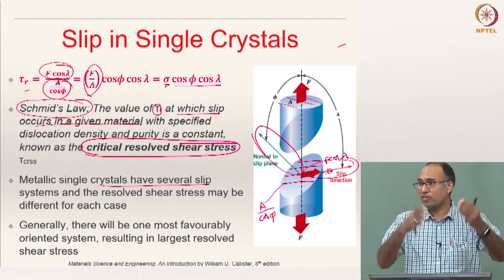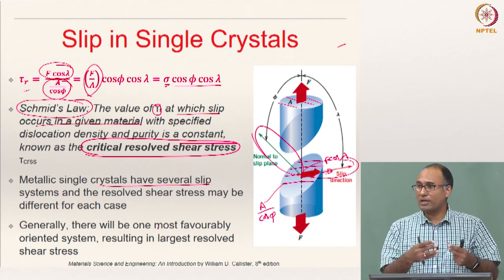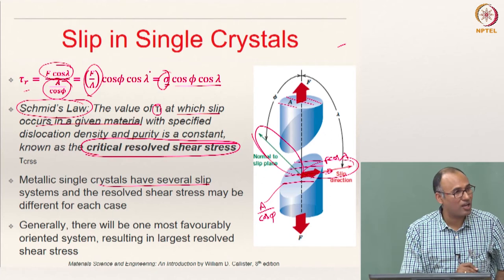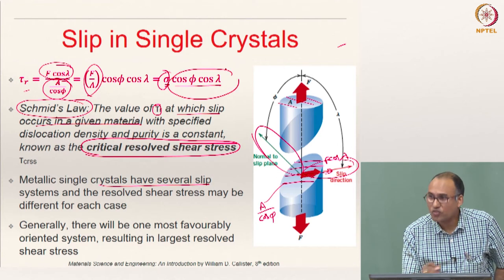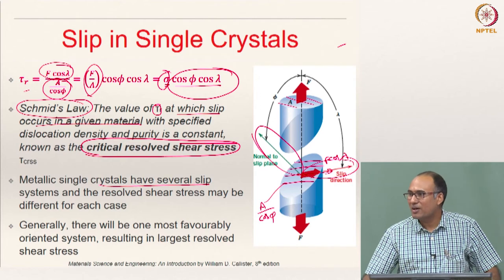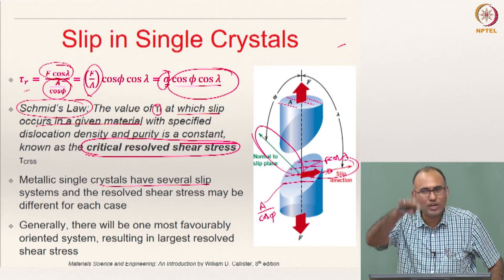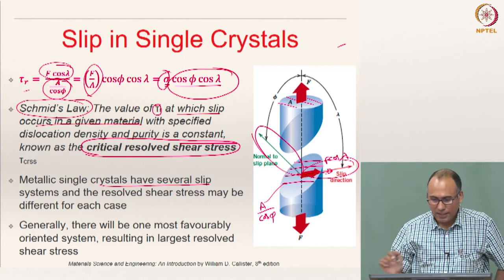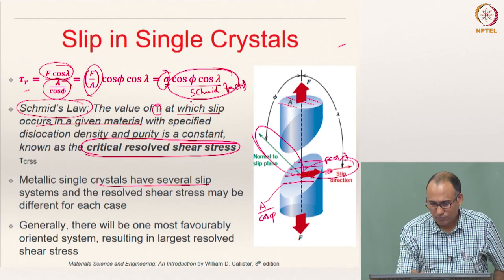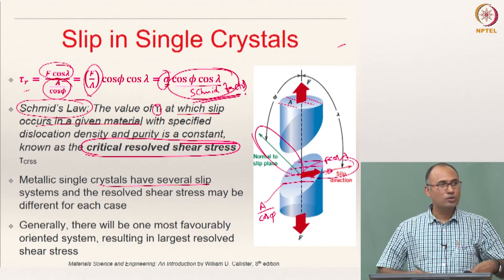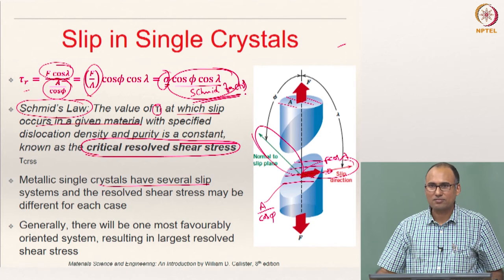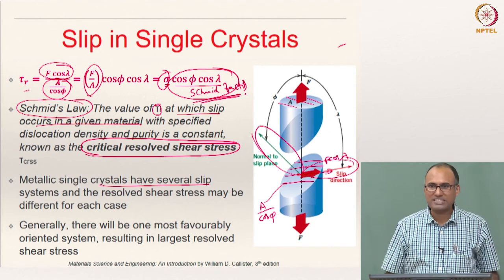In principle, you can have several slip systems and all of them may be active, but one is more active. The applied stress sigma is the same for all slip systems, but the quantity cos phi × cos lambda determines the magnitude of the resolved shear stress on each particular slip system. This factor is called the Schmid factor, and the favorable slip system is the one that maximizes the Schmid factor.